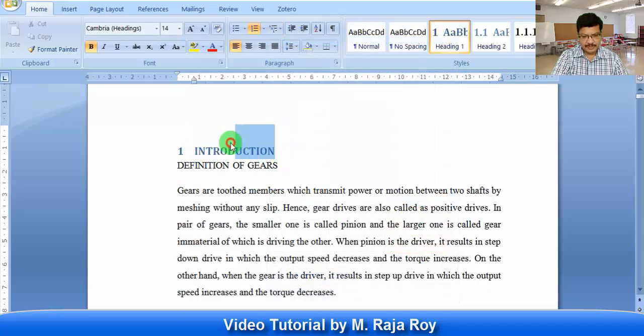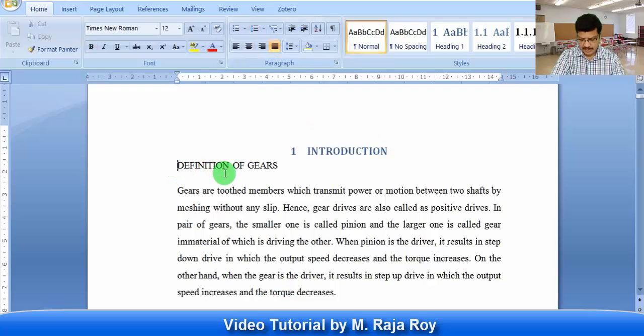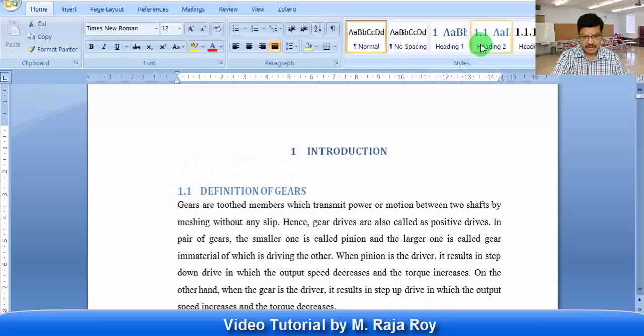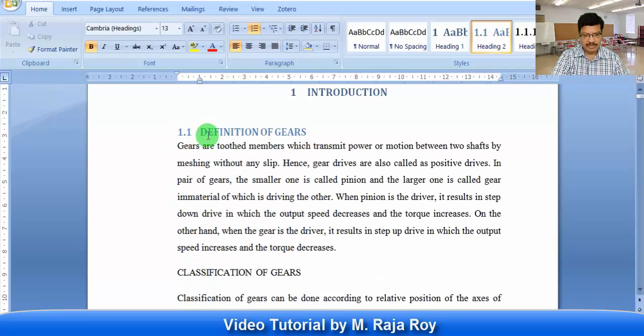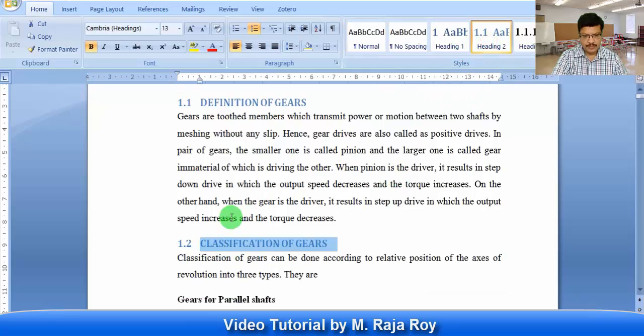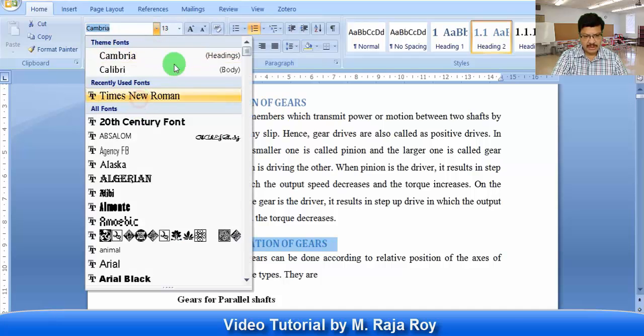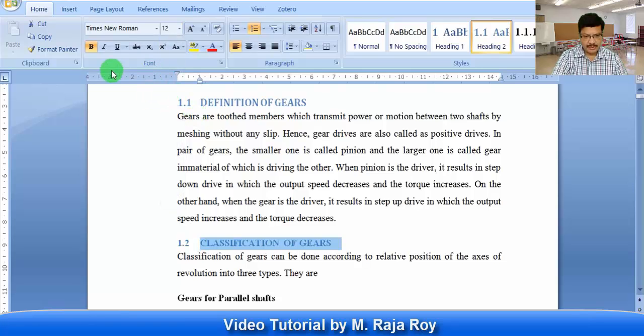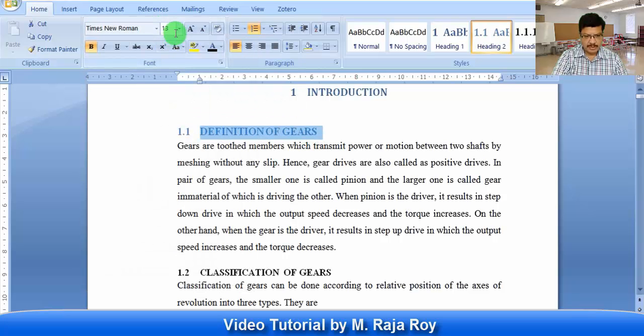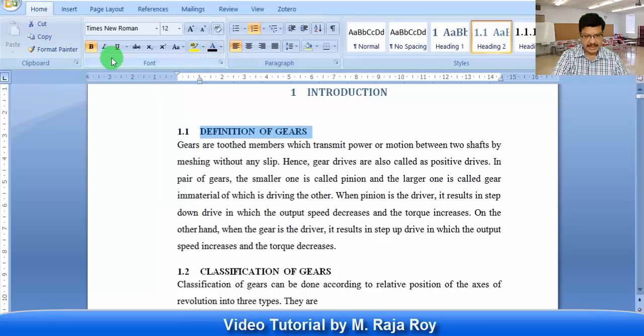So this is 1, 1.1. You align this to center. Then this particular introduction will become 1.1 as heading 2. Then this will become 1.1.1. Then this is 1.2. Select this, select heading 2. Then this will become 1.2. You can change the font style for this. This is Times New Roman 12, color is black. Here also you can change the color. Times New Roman 12 is black and it is in bold.